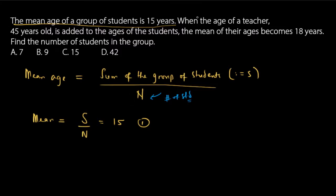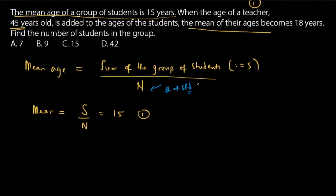Now let's read on. It says: when the age of a teacher, 45 years old, is added to the ages of the students, the mean of their ages becomes 18 years. Note that the teacher is added to the original number of students, with the teacher's age being 45 years. How do we convert this condition into a mathematical statement?